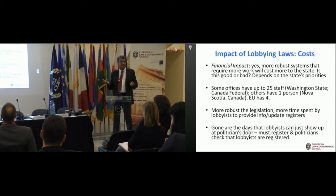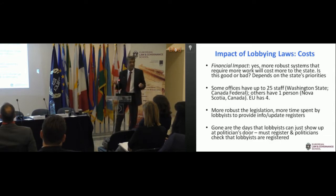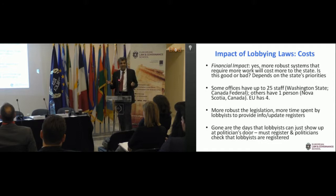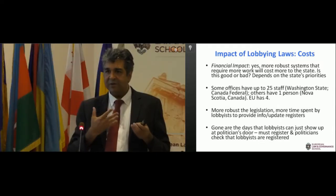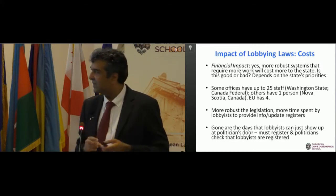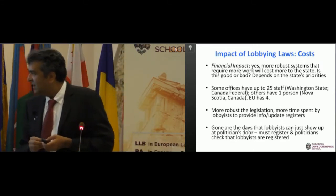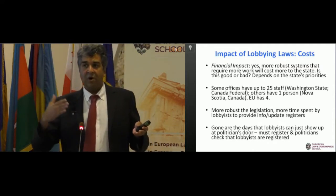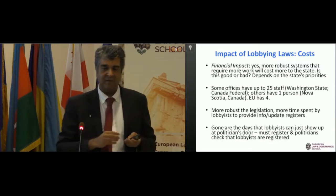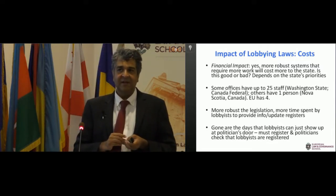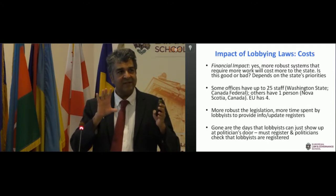We see that some jurisdictions — Washington State, the federal office in Canada — have sizable staff offices. You require a building, you require 25 people on varying salaries from senior to lower levels, which can cost the state a lot. Having an electronic register set up is also costly. Lobbyists themselves might have to give quarterly reports on their activities, so it costs them resources as well throughout the whole registration process. A lot of states say they don't want to get into this because it costs money.